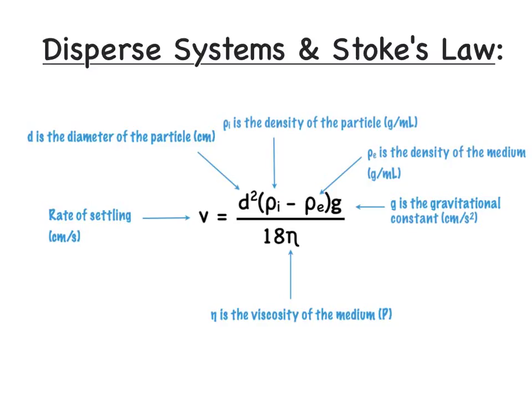Let's take a look at how Stokes' Law applies to dispersed systems — both suspensions and emulsions. Stokes' Law tells us that the rate of particle settling is equal to the diameter of the particle squared, times the density of the particle minus the density of the medium, multiplied by the gravitational constant. That whole numerator term is divided by 18 times the viscosity of the medium.